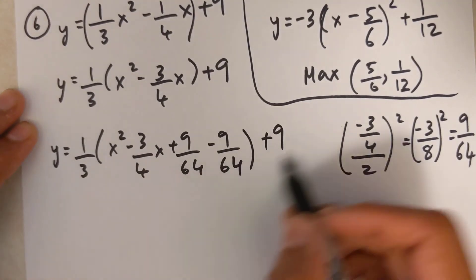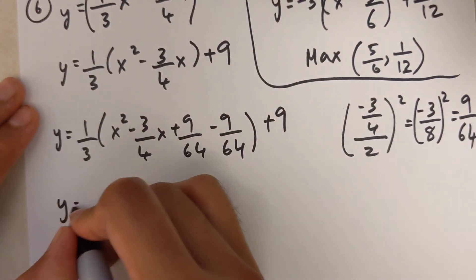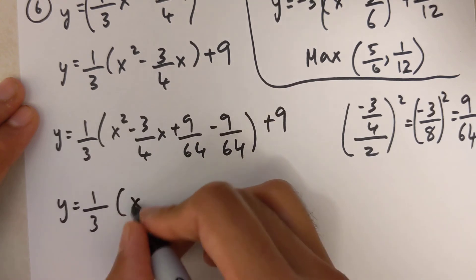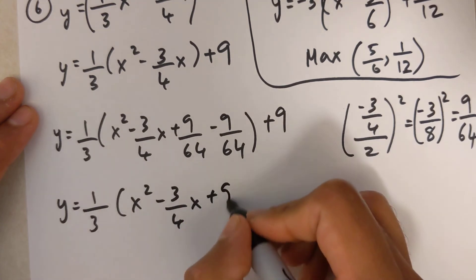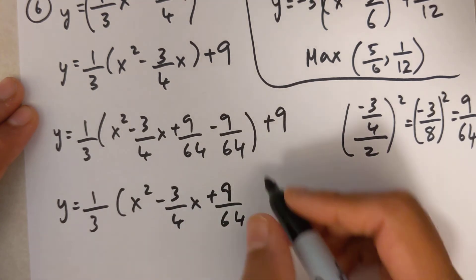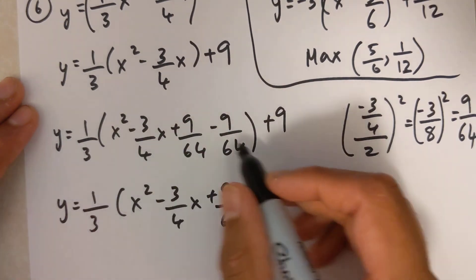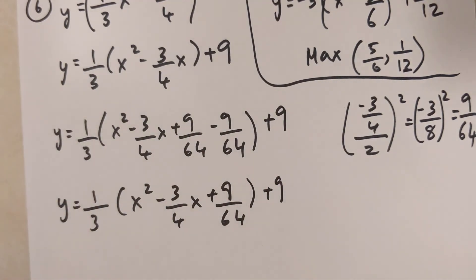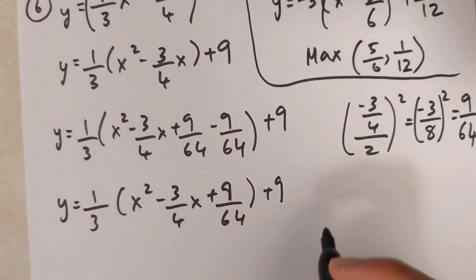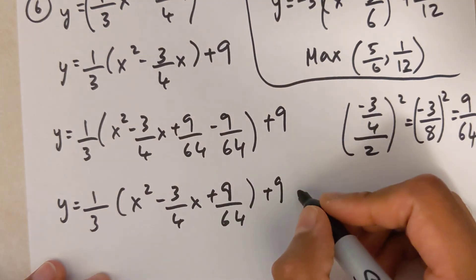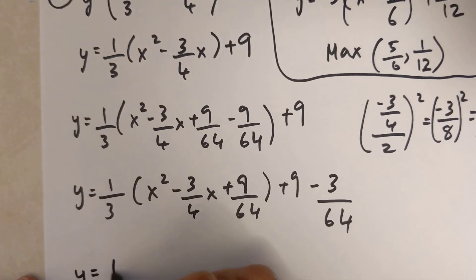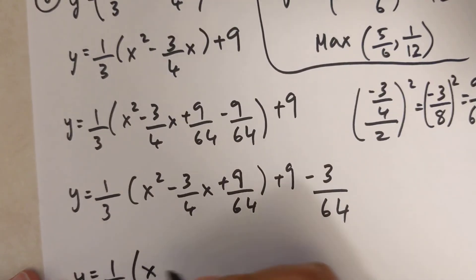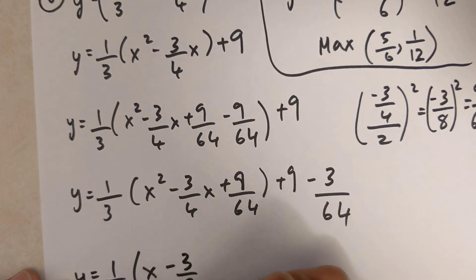Moving the 9 over 64 outside: y equals 1 over 3 times x-squared minus 3 over 4 x plus 9 over 64, plus 9, and then I multiply 9 over 64 by 1 over 3. Doing that in the calculator gives negative 3 over 64. The bracketed expression is a perfect square: x minus 3 over 8, whole squared.